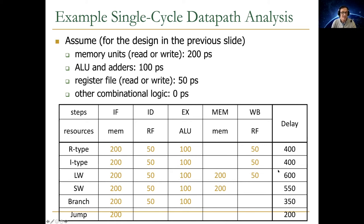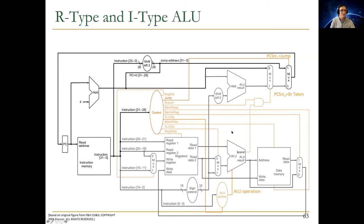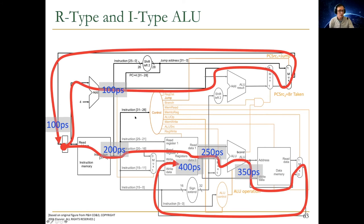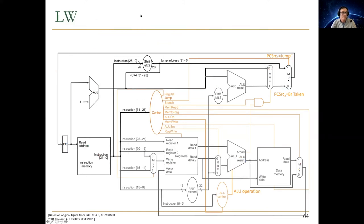Let's trace the critical path for R-type and I-type ALU: read instruction from memory (200 ps), read registers (50 ps), execute in ALU (100 ps), then write destination register to the register file (50 ps) — total 400 ps. PC+4 via the adder at 100 ps is not on the critical path. For load word: read instruction (200 ps), read register (50 ps), compute address in ALU (100 ps), read memory (200 ps), write register (50 ps) — total 600 ps.